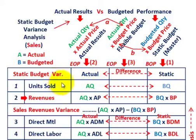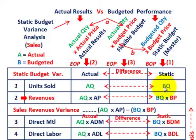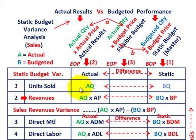Looking at our table, we need to know our units sold. Everything in the actual results column is based on actual quantities, while the static budget column uses budgeted quantities and prices. Items in blue are budgeted amounts, red items are also budgeted, green items are actuals, and dark blue represents unit costs. For revenues, that's actual quantity times actual price for the actual amount, and budgeted quantity times budgeted price for the static amount — everything here is on a per-unit basis.